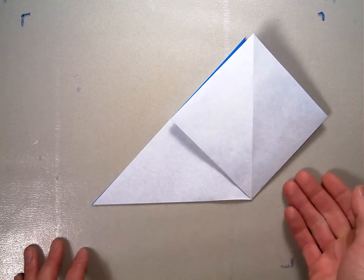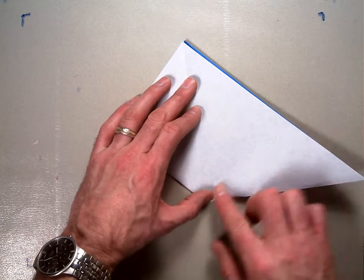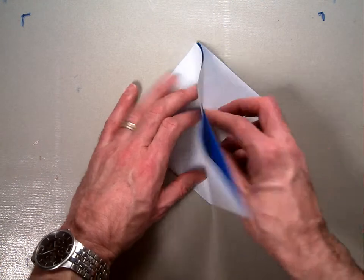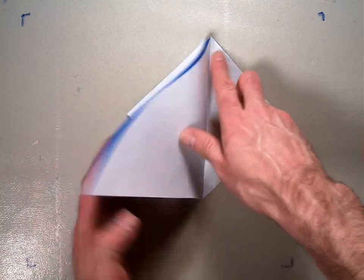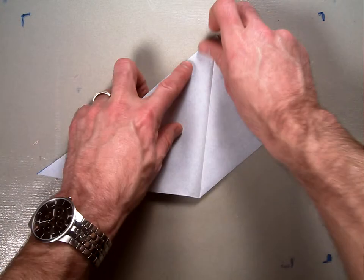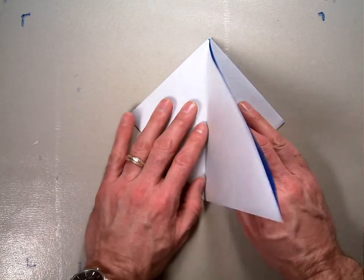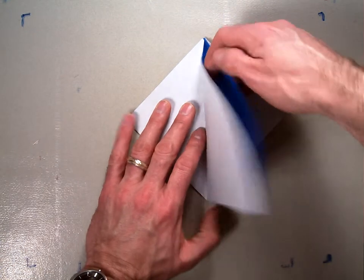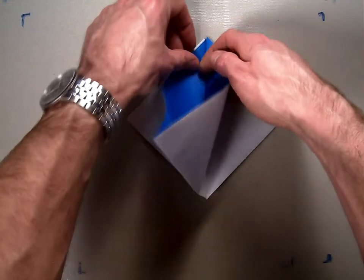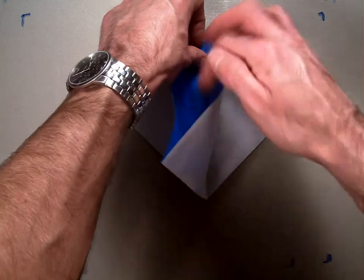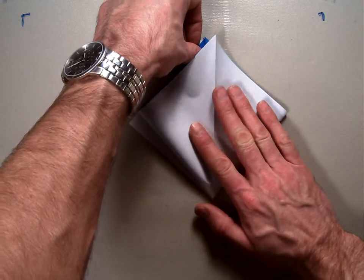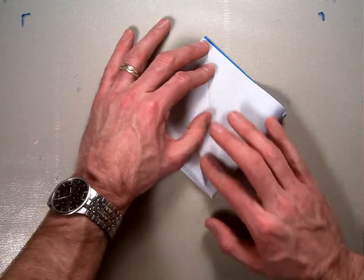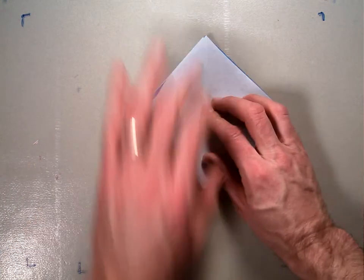Once you do that, flip your model over and do the same procedure on the other side. Take this flap, flip it up so that it is standing up straight. Open those two flaps, and while you're holding them still so they don't slide away from you, take this piece and squash it down like that.